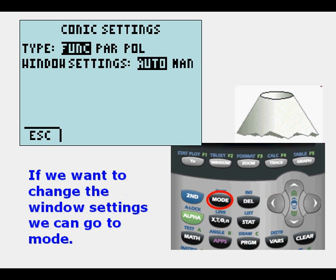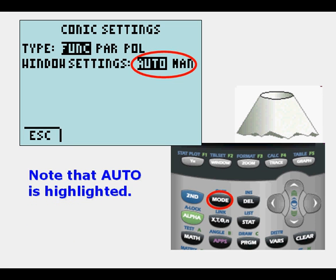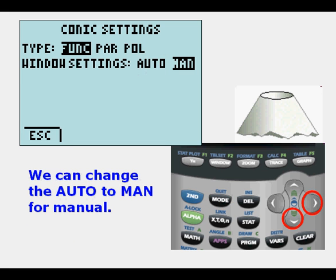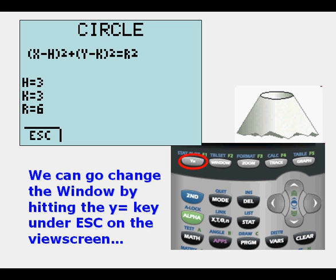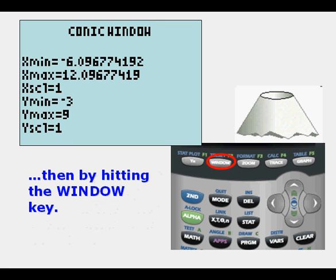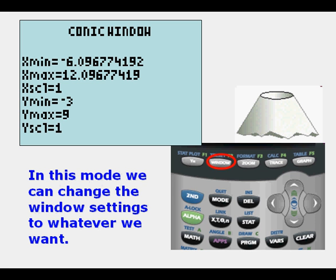If we want to change the window settings, we can go to Mode. Here's the Mode key and what you see here. Note that Auto is highlighted. We can arrow down and to the right, and change Auto to Manual. When we do that, we can press the Y equals key to go back to this menu, and then we can press the Window key to get to Conic Window. In Conic Window, we can change window settings to whatever we want.